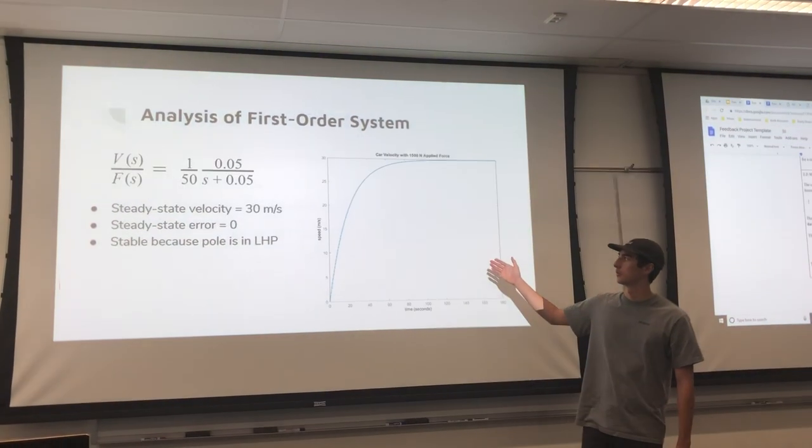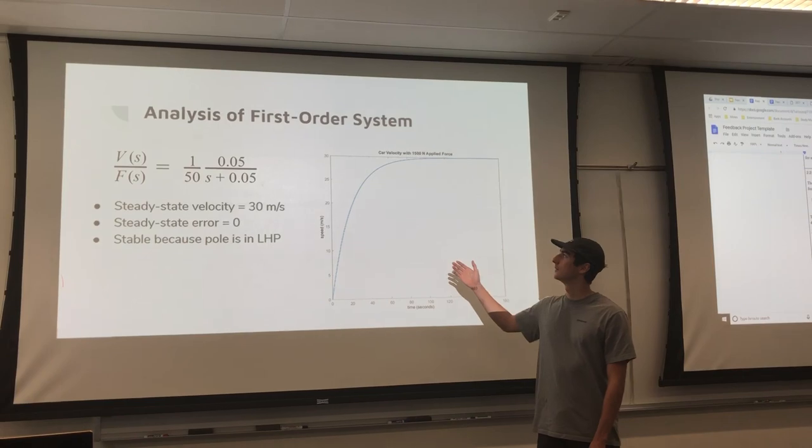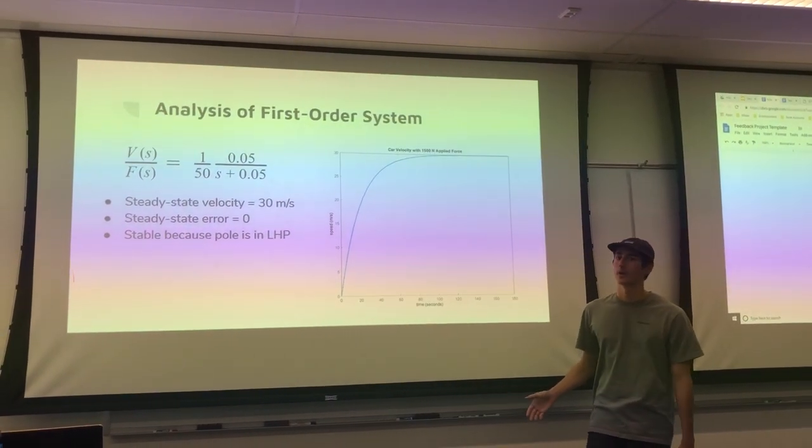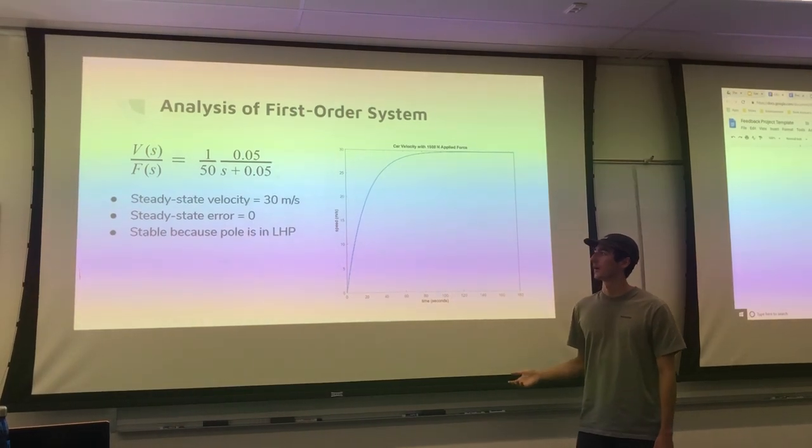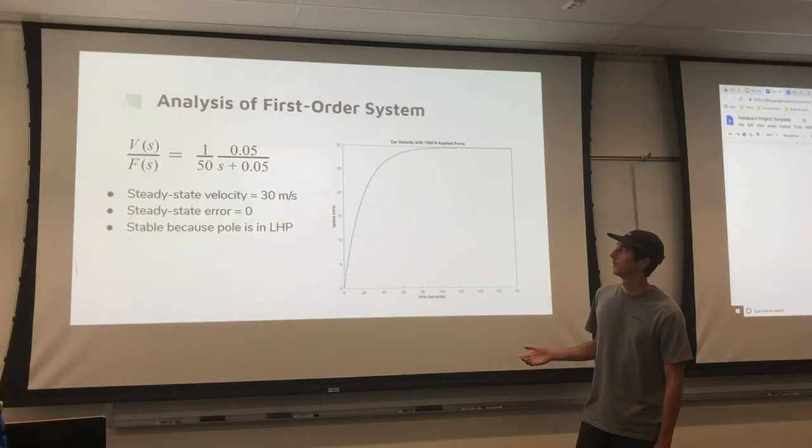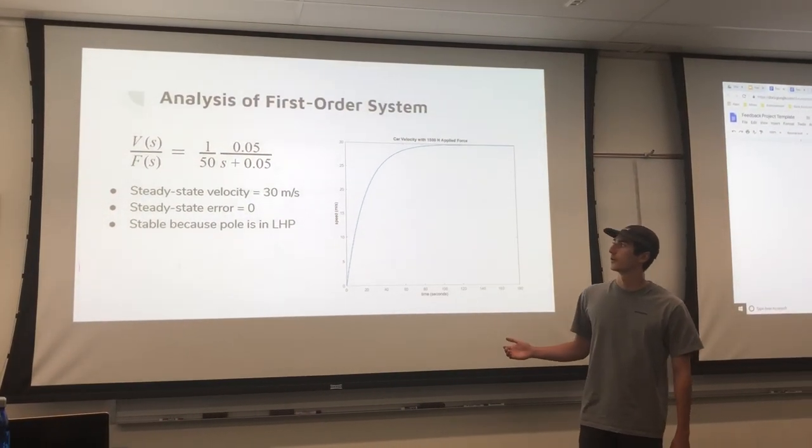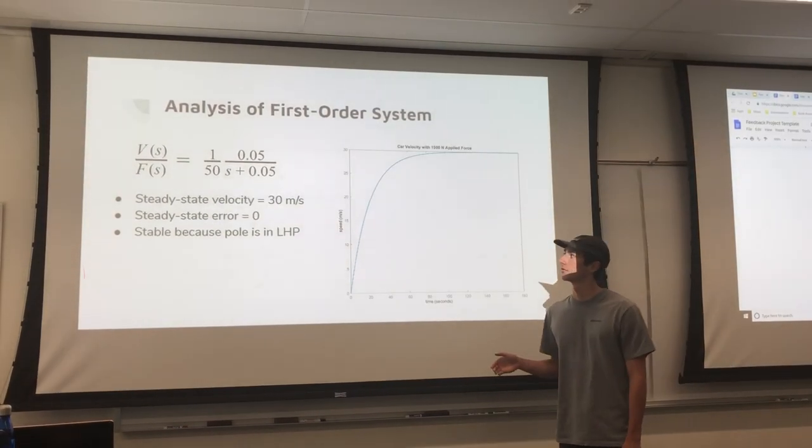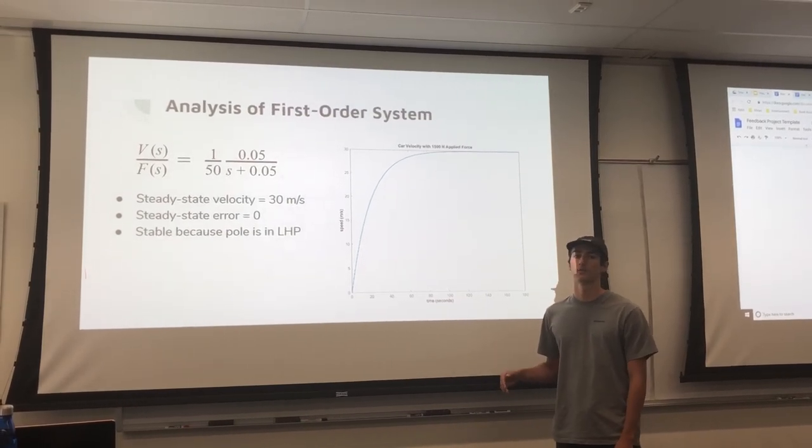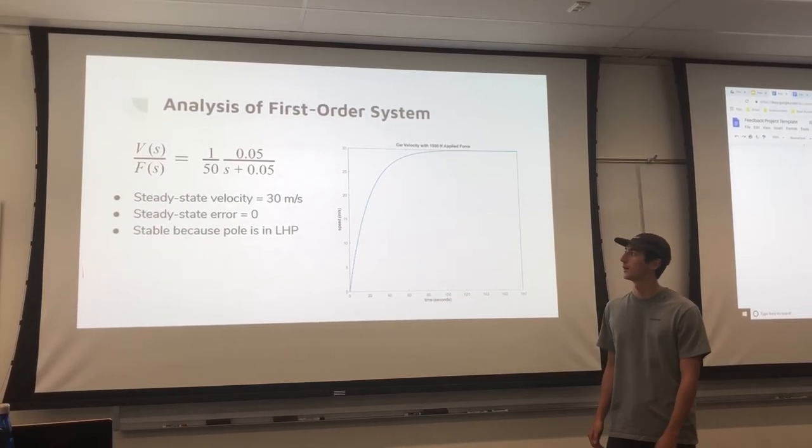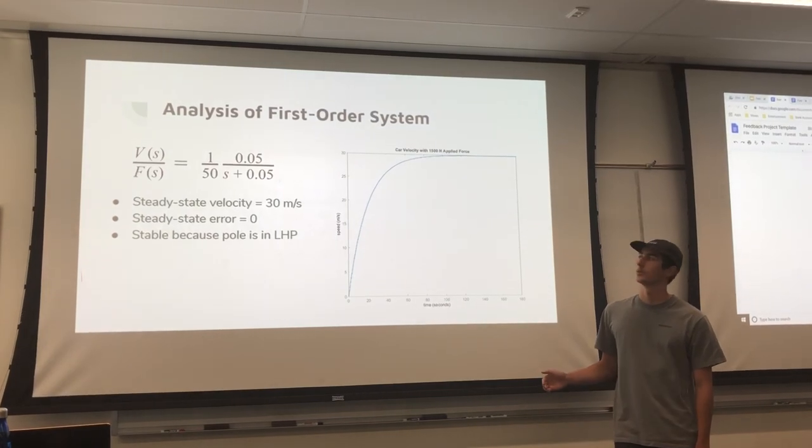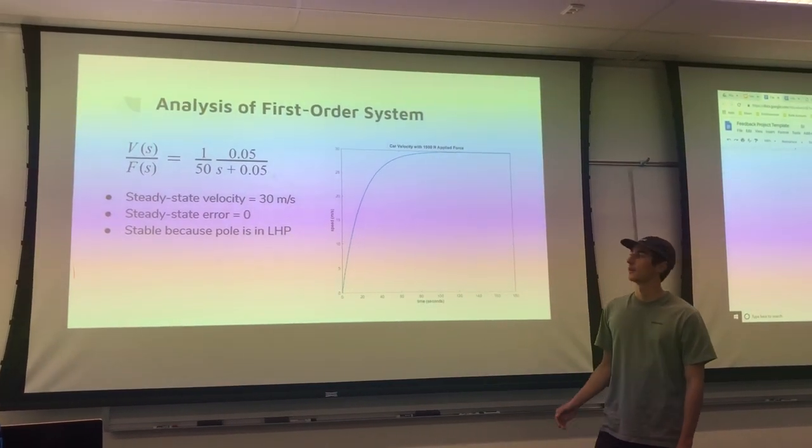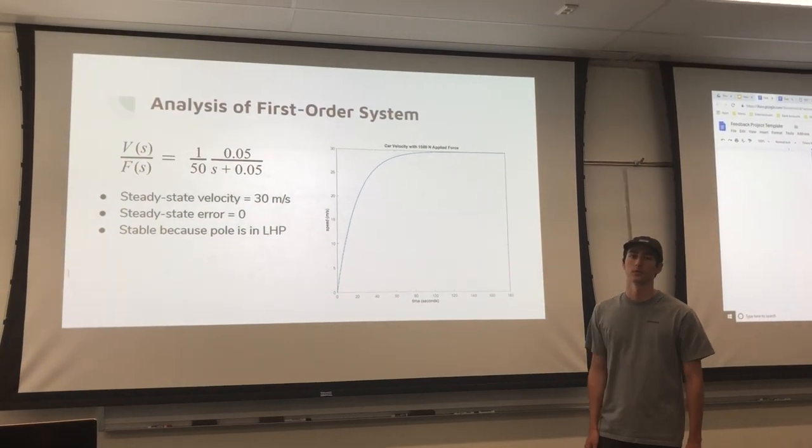Based off this MATLAB plot, the car settles at around 30 meters per second, around 65 miles per hour, which is a desired highway speed. Going into further analysis, we bring it into standard form, which is 1 over 50 times s plus 0.05. We see we have a pole in the left-hand plane at 0.05, meaning it is indeed a stable system.